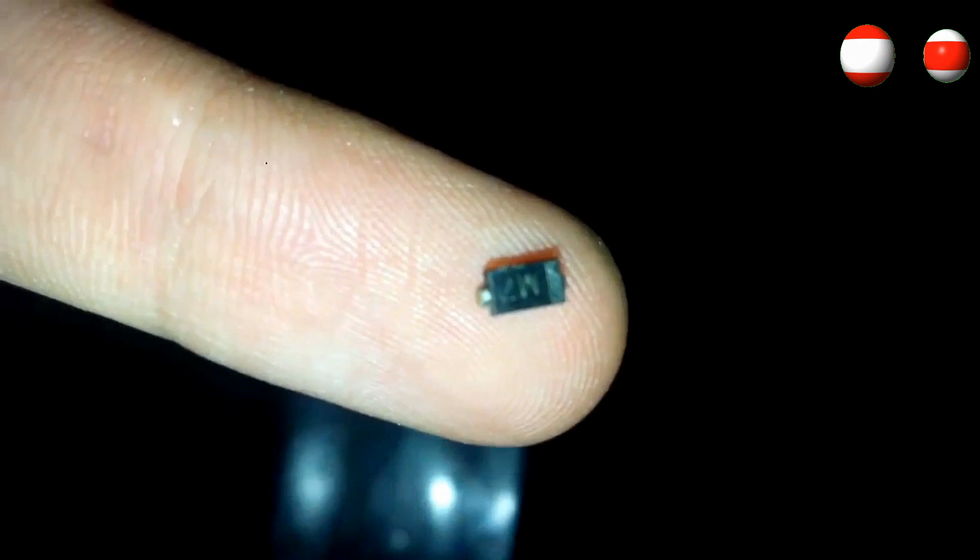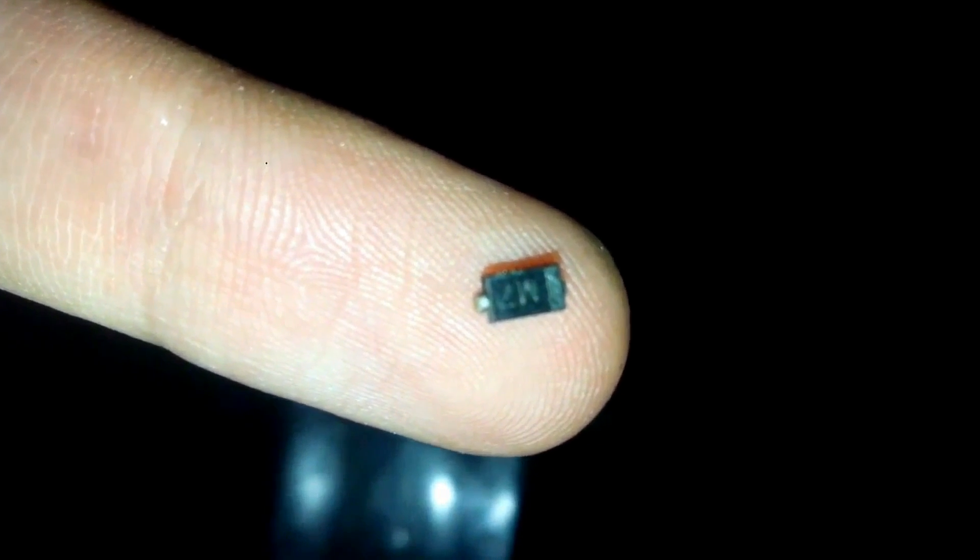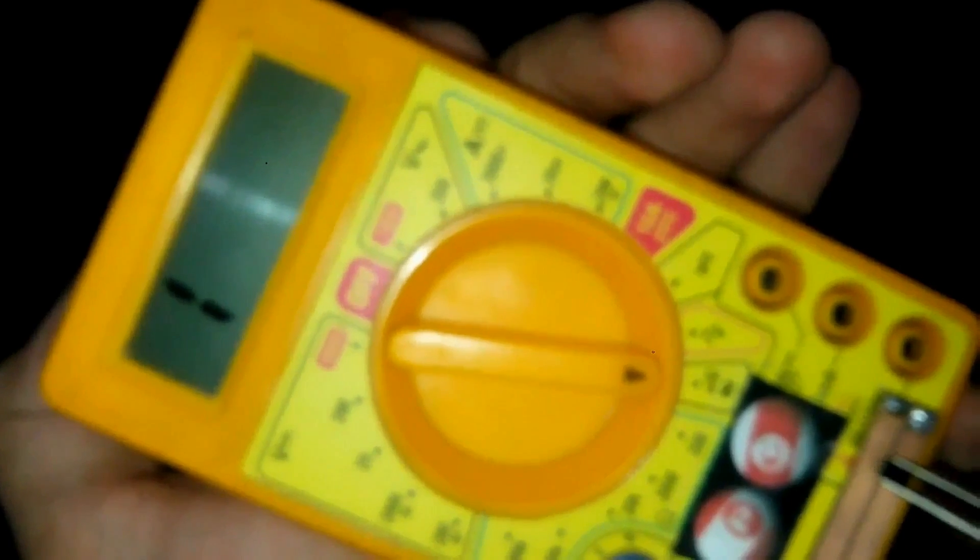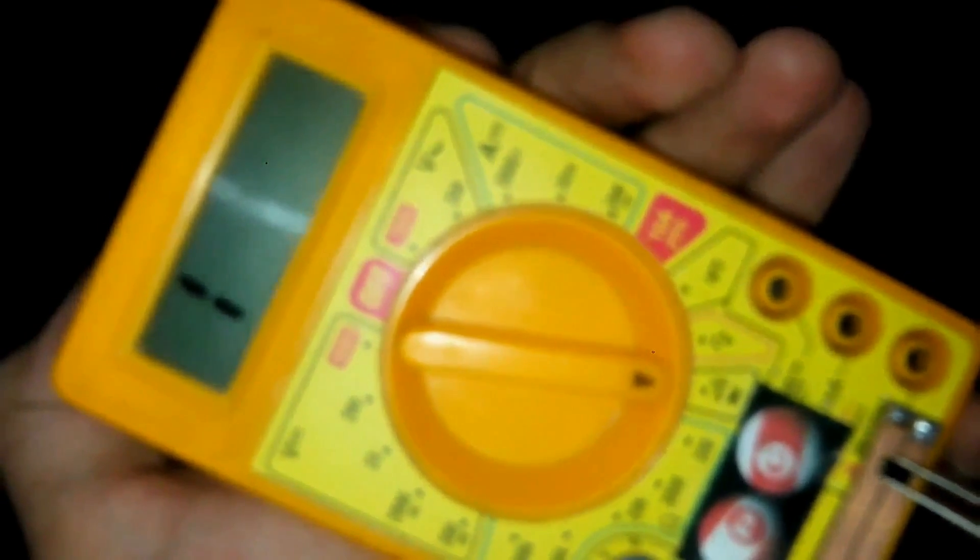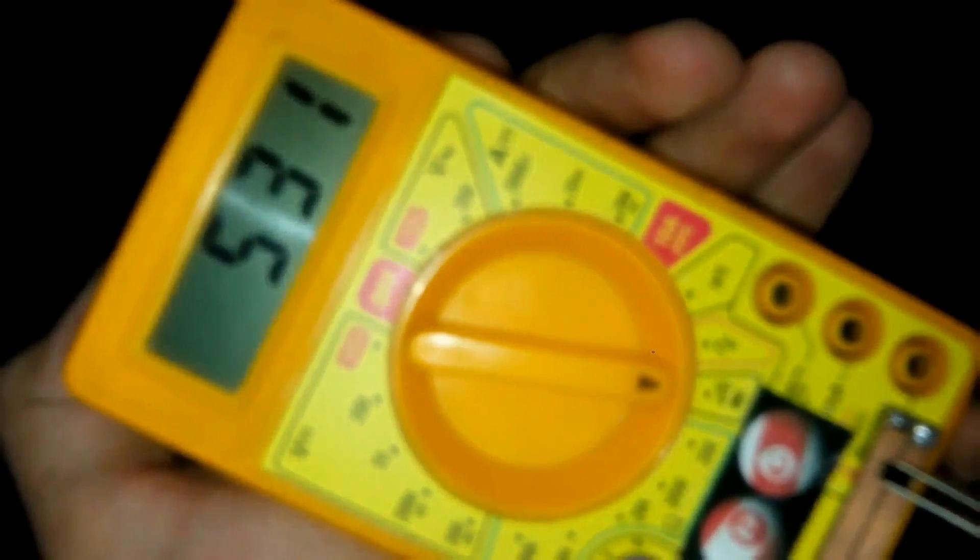It glows, it is working. For testing the diode, keep the multimeter on diode mode and again place it between the strips. It shows the resistance, that means it is okay.